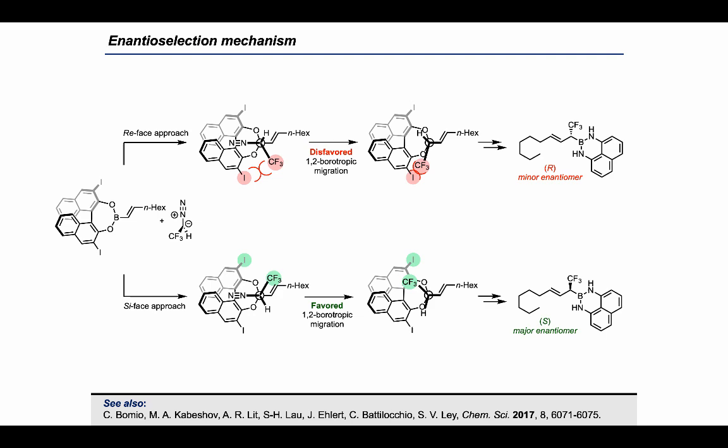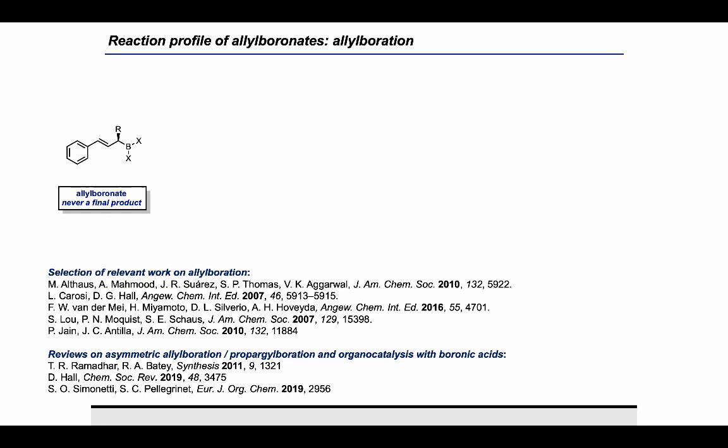If you are a synthetic chemist and you ever use boronates or boronic acids in the lab, I bet that they are not your final products. Organoboronates are reagents — synthetic tools to make complex molecules. Alloboronates are no different. And even though during reaction development they were our products, alloboronates are hardly ever a final product. We make them because we want to use them.